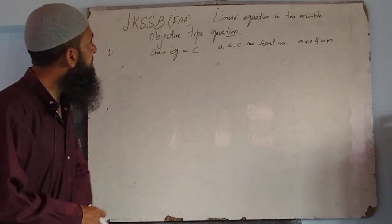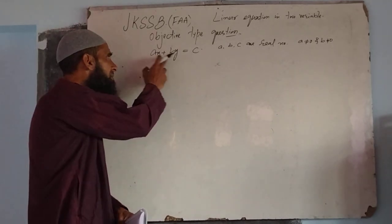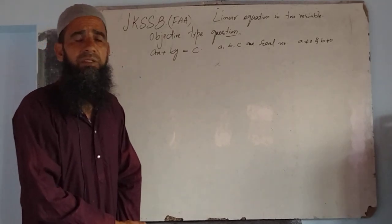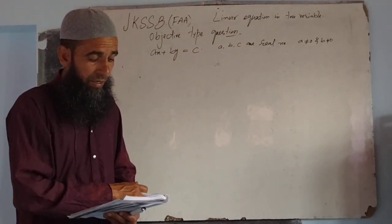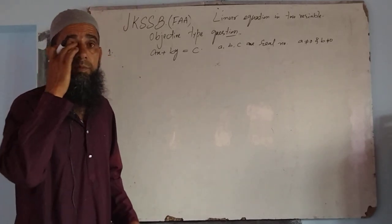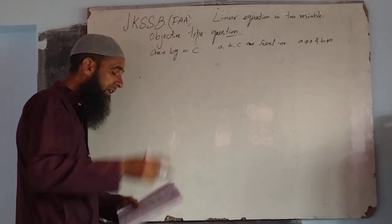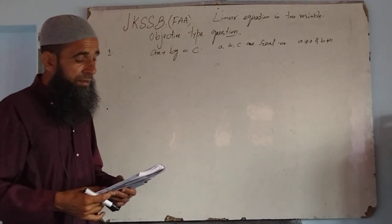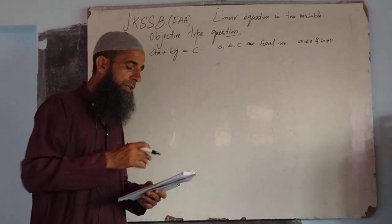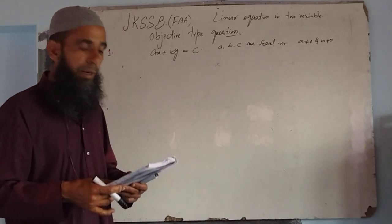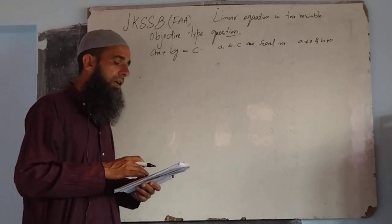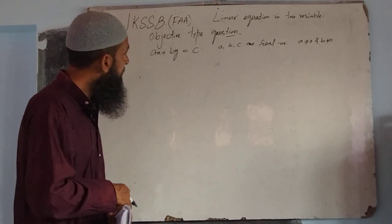What is the option? This linear equation where a, b, c are real numbers and a, b are non-zero — first option represents a circle in a plane. Second option represents a straight line in a plane. Third option represents a complex curve in a plane. And fourth option is none of these.